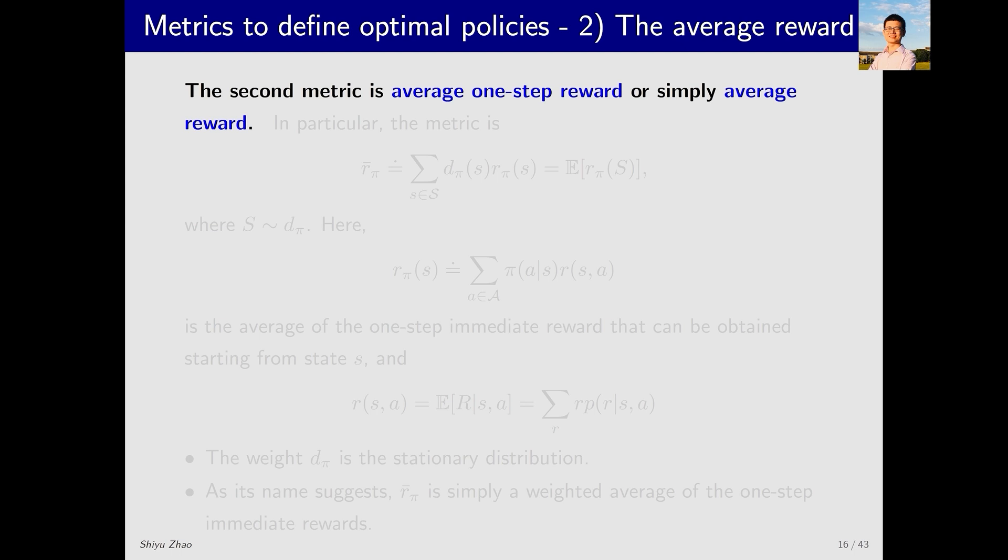Now, let's introduce the second metric. The first one was the average value, and now we're looking at the average reward, or average one-step reward. What is it?